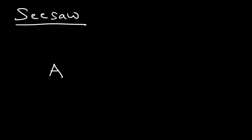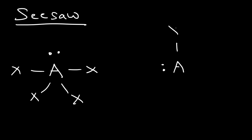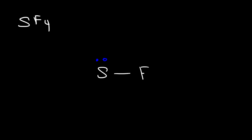In the seesaw structure, you have a central atom with a lone pair and four other atoms attached to it. One good example is sulfur tetrafluoride (SF4). In this structure, sulfur contains one lone pair and is attached to four fluorine atoms, each of which also contains three lone pairs.